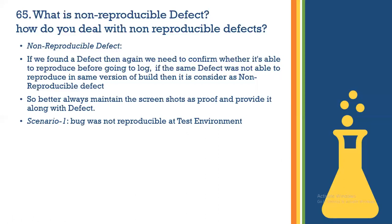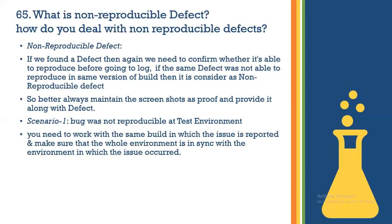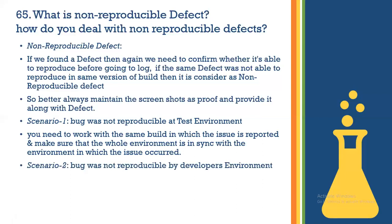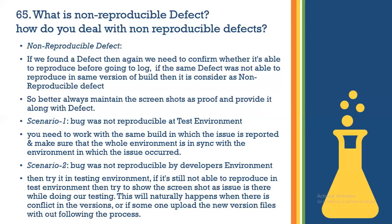There are two scenarios where you get a non-reproducible defect. Scenario one: if the bug is not reproducible in the testing environment, you need to work with the same build in which the issue was reported and make sure the whole environment is in sync with the environment in which the issue occurred.